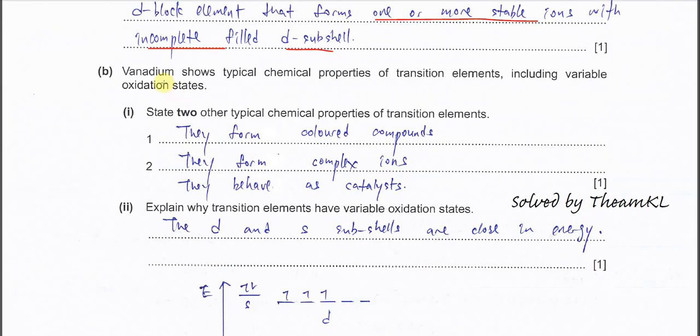Part B. Vanadium shows typical chemical properties of transition elements including variable oxidation states. State two other typical chemical properties of transition elements. First, they can form colored compounds and they can form complex ions.